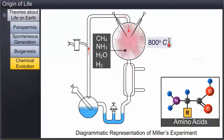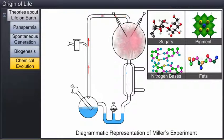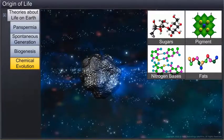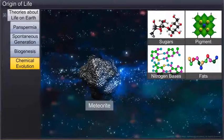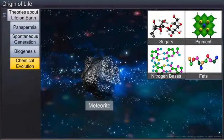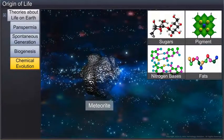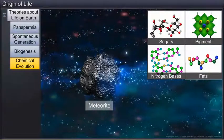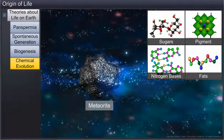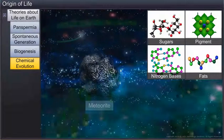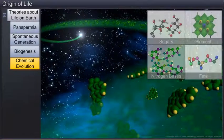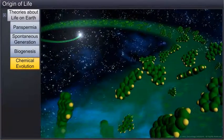Later on, while conducting similar experiments, other scientists observed the formation of sugars, nitrogen bases, pigment, and fats as well. Interestingly, when meteorite content was analyzed, similar compounds were found in them, which proved that similar processes occurred in other parts of the universe as well. Thereafter, the theory of chemical evolution was most widely accepted.